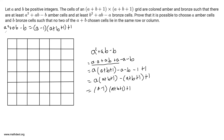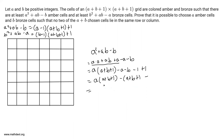Similarly, the number of bronze cells must be at least B²+AB-A. Using the exact same factorization trick, you get B²+AB-A = (B-1)(A+B+1) + 1. That looks a little bit nicer — we've related it to the side length of the grid, which will come in very useful because of what we're going to do next.